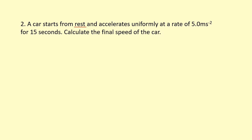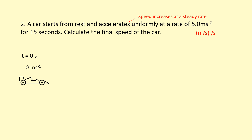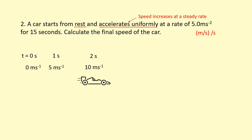Example 2: a car starts from rest — meaning it is stationary at the start — and accelerates uniformly, meaning it speeds up at a steady rate of 5 m/s². So every second, the speed increases by 5 m/s. Visualizing this: at t = 0 it's stationary, after 1 second it's doing 5 m/s, after 2 seconds 10 m/s, after 3 seconds 15 m/s. Notice also that the distance covered each second gets larger as it speeds up.